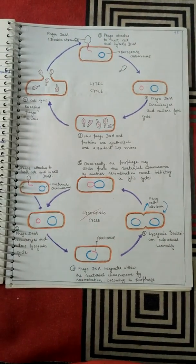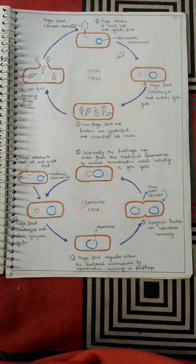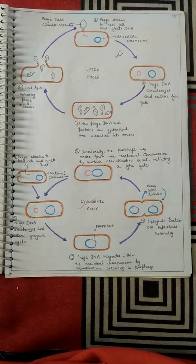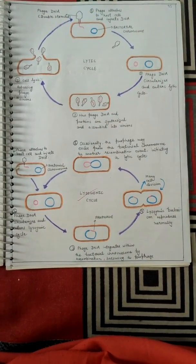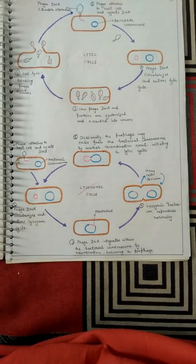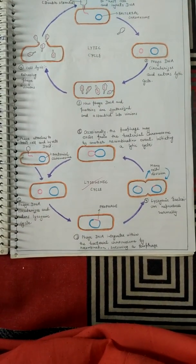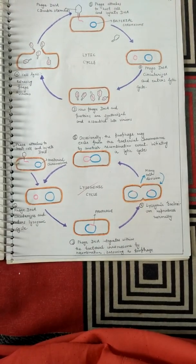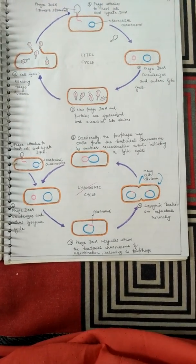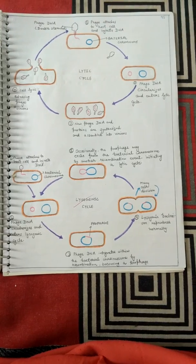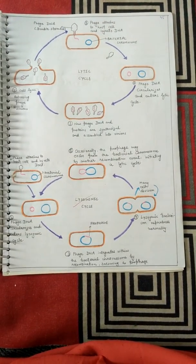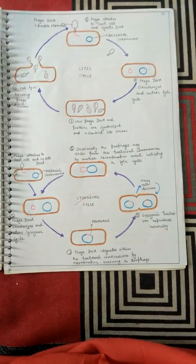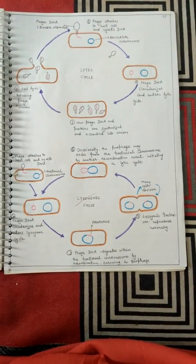Welcome friends. Today in this video I am going to share something about the bacteriophage life cycle. Bacteriophage is a viral particle which feeds upon bacteria — that's why it is known as bacteriophage. It completes its life cycle with two methods: one is the lytic cycle and the second one is the lysogenic cycle.